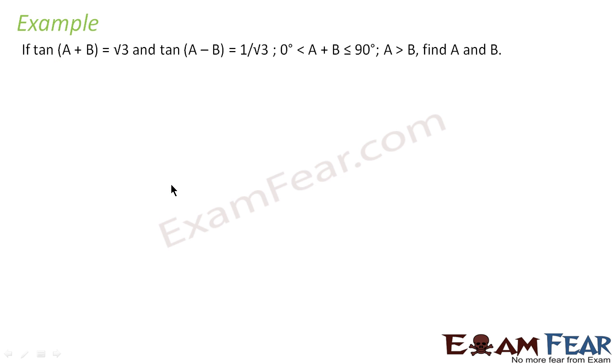The question says if tan(A + B) = √3 and tan(A - B) = 1/√3, where 0° < A + B < 90° and A > B, we have to find A and B.